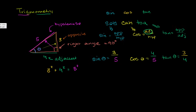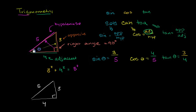Now let's think about another angle in this triangle. Let me redraw the exact same triangle with lengths 4, 3, and 5. Last example we used theta, but let's look at the angle up at the top — I'll call this angle x. Let's figure out the trig functions for angle x.